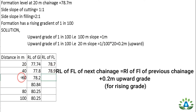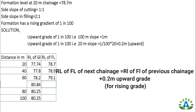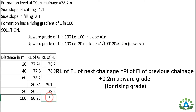At 60-meter chainage, there are two ground levels but only one formation level per chainage. So we add 0.2 to the previous value: 78.9 + 0.2 = 79.1 meters. At 80-meter chainage: 79.1 + 0.2 = 79.3 meters. At 100-meter chainage: 79.3 + 0.2 = 79.5 meters.